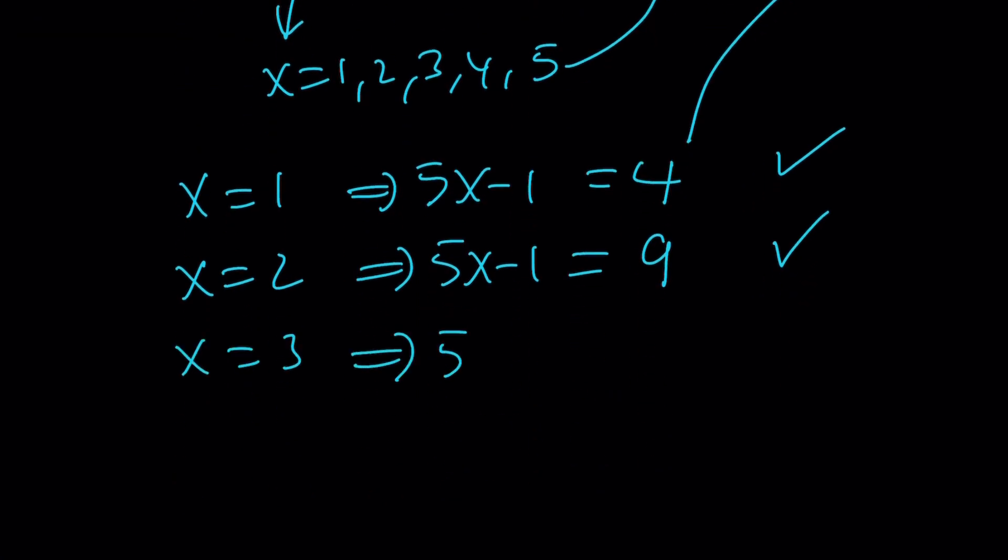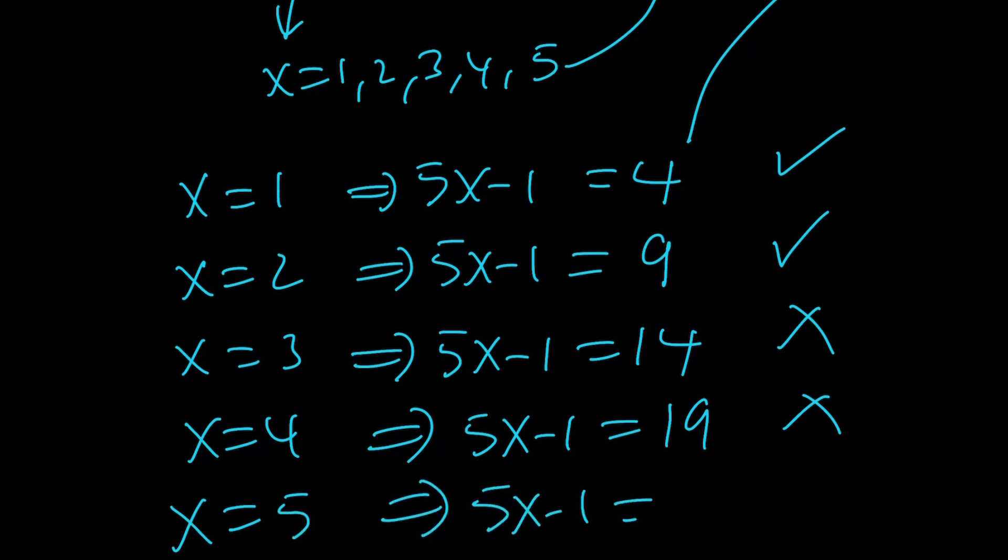If x is equal to 4, then 5x minus 1 is equal to 19. That's not a perfect square. And finally, if x is equal to 5, 5x minus 1 is equal to 24. And that is not a perfect square either.